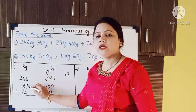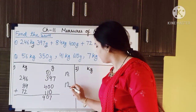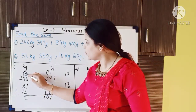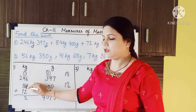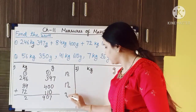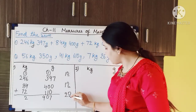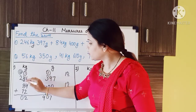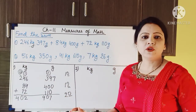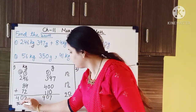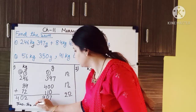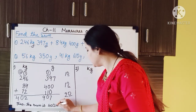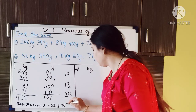Now 6 plus 4 is 10, plus 2 is 12. We write 2 here and carry 1 to the next place. Then 4 plus 1 is 5, plus 8 is 13, and 13 plus 7 is 20. We write 0 here and carry 2 to the next place. Then 2 plus 2 is 4. So the sum is 402 kg 907 gram.